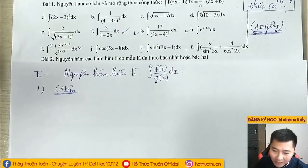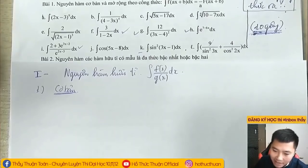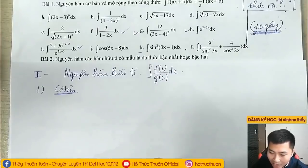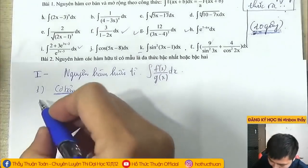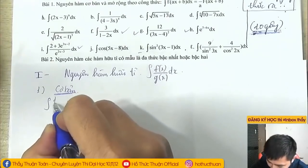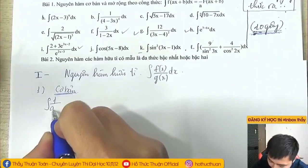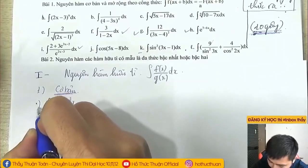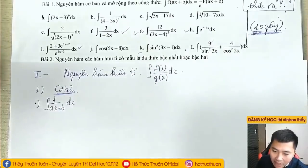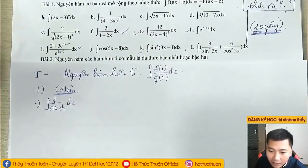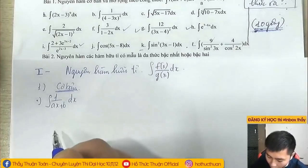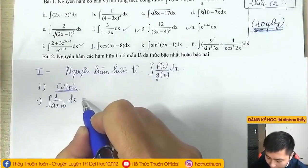Tất cả các bạn lấy giấy bút ra ghi chép cẩn thận vào nhé. Dạng cơ bản của chúng ta bao gồm những dạng sau. Cơ bản tức là chúng ta nhìn vào một phát là có thể làm luôn. Thậm chí các em không học các bạn vẫn làm được. Thầy sẽ lấy cho các em một số ví dụ và sau đó chúng ta đúc kết ra công thức. Cái thứ nhất: nguyên hàm của 1/(ax+b) dx.